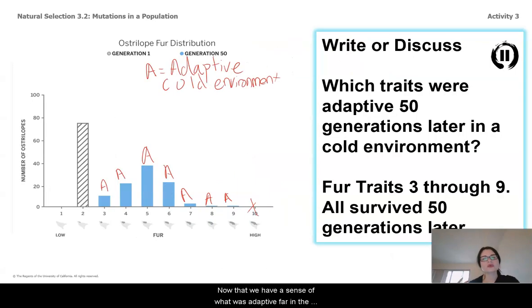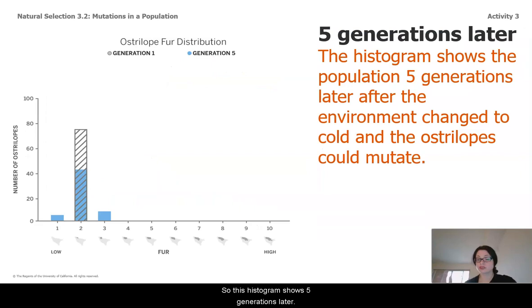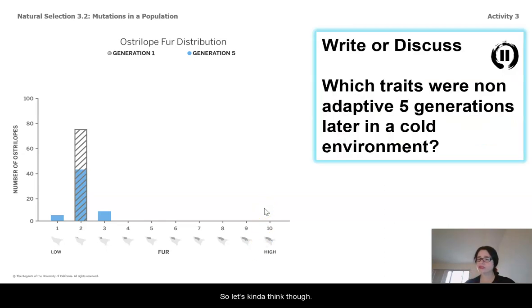So, now that we have a sense of what was adaptive far in the future, let's back up and think about what happened a little earlier in the timeline. So, this histogram shows 5 generations, and you can see that the traits had already changed pretty quickly within those 5 generations. So, let's kind of think, though. This histogram looks really different. Which traits are you seeing were probably non-adaptive to a cold environment? Go ahead, write pause.